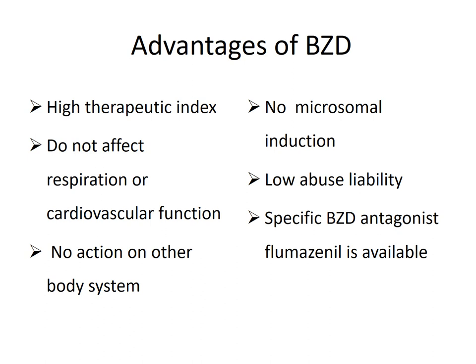What are the advantages of these agents over other CNS depressants? These agents have a high therapeutic index, do not affect respiration or cardiovascular functions, no actions on any other body systems, no microsomal induction, so there is less chance of drug interaction, and no abuse liability or dependence. And even if these drugs are administered in a high amount, we can reverse all the side effects by using a specific antagonist known as flumazenil.